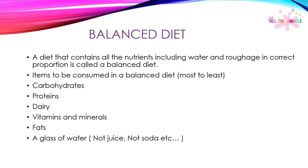Balanced diet: a diet that contains all the nutrients, including water and roughage, in correct proportion is called a balanced diet. Items to be consumed in a balanced diet include carbohydrates, proteins, dairy, vitamins and minerals, fats, and a glass of water — not juice, not soda.